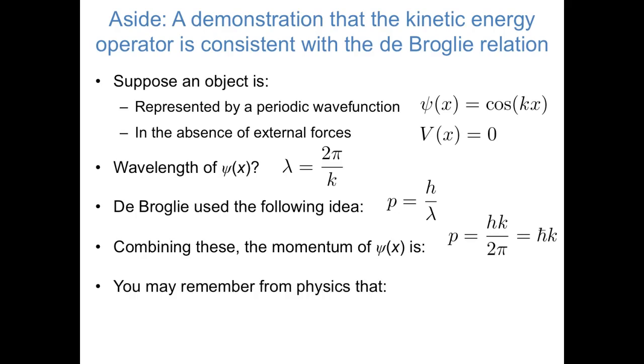You may remember from classical physics, that kinetic energy is equal to momentum squared over 2 times mass. If we put all of this together, that means that for our object, the de Broglie relation tells us that the kinetic energy equals h bar squared k squared over 2m. Let's put a pin in that, and we'll see if the Schrödinger equation agrees with this.